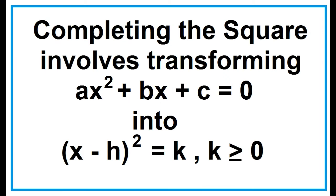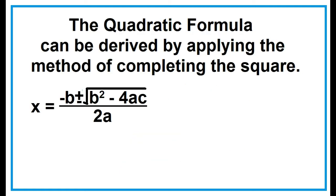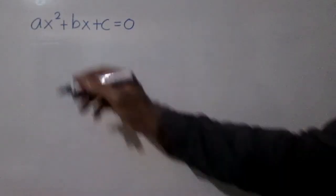Completing the square involves transforming ax squared plus bx plus c equals 0 into the square of x minus h equals k, where k is greater than or equal to 0. The quadratic formula can be derived by applying the method of completing the square. Here's how.